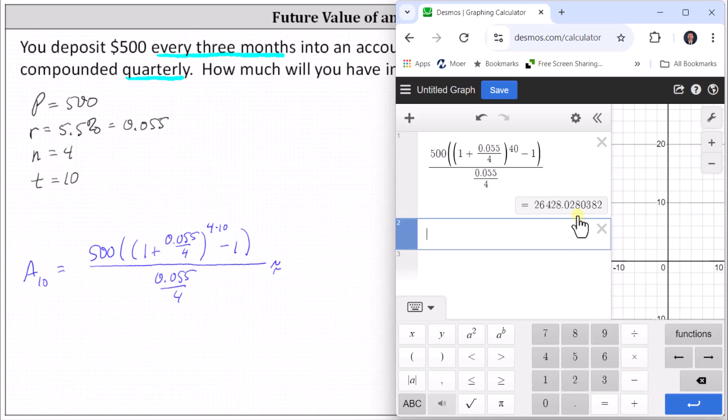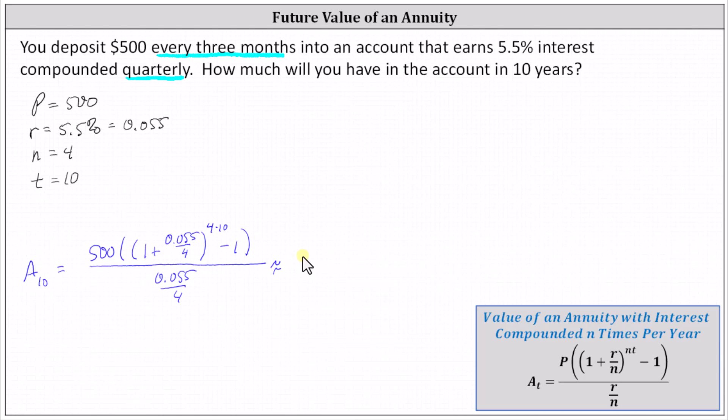So to the nearest cent, we have $26,428.03. The account balance after 10 years is $26,428.03.